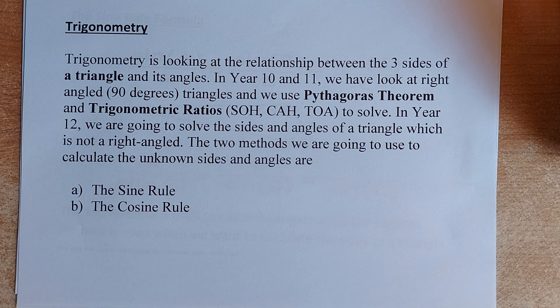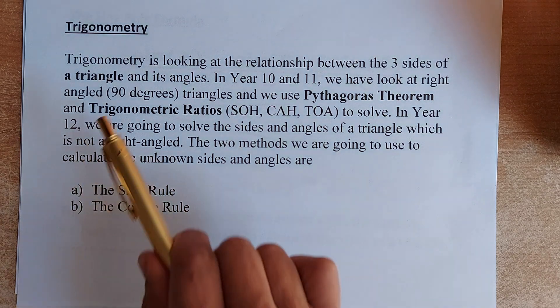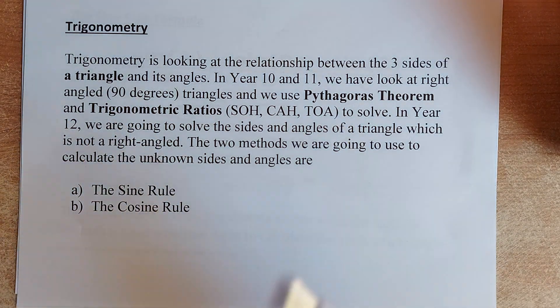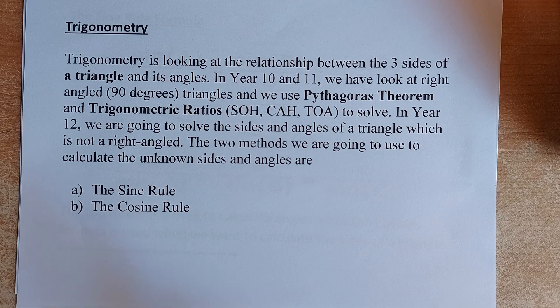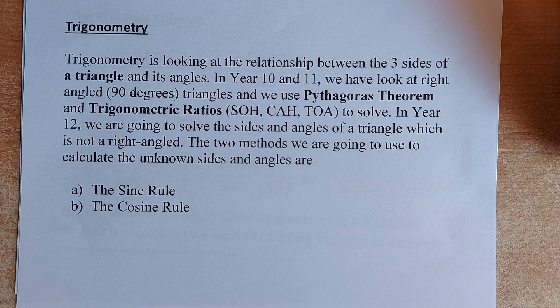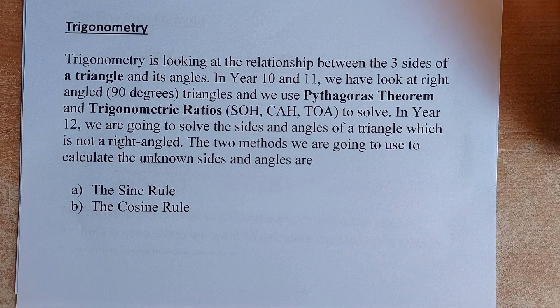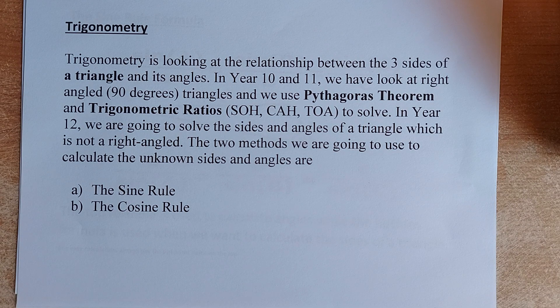We have looked at trigonometry in year 10 and 11. We have looked at the right angle triangles. We used the Pythagoras theorem as well as the trig ratio. You can remember them with the SOH CAH TOA to solve the right angle triangle, the angle and the size of a triangle. In year 12, we are going to look at another type of triangle. This time, the triangle could be any triangle and they are not right angle.